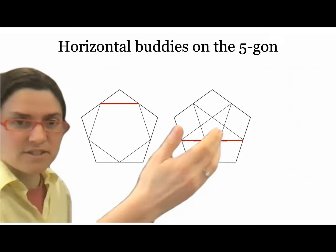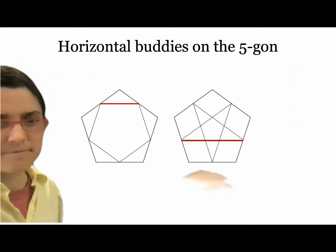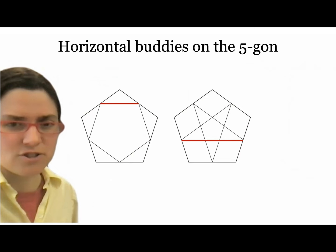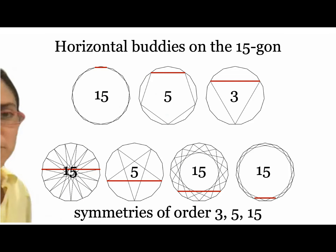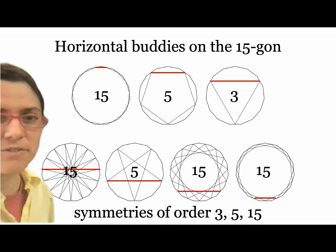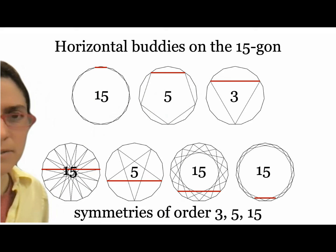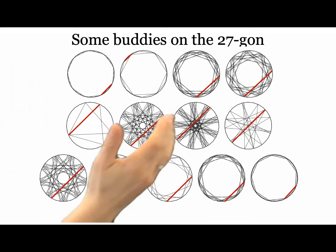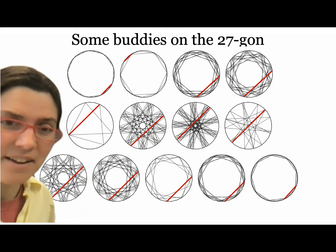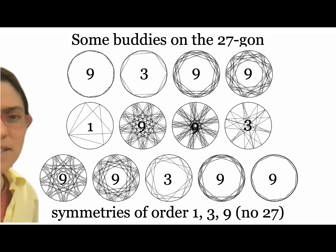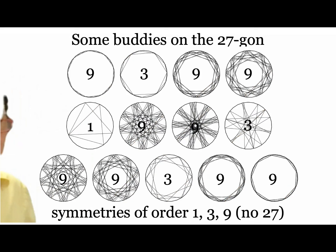Here are some horizontal buddies on the regular pentagon — you can see they're parallel because of the emphasized horizontal edge. This is horizontal buddies on the 15-gon: they're all parallel, but you get all this different stuff just by moving the horizontal trajectory down. These have orders of symmetry 15, 5, and 3. You can convince yourself that the order of symmetry of one of these trajectories always has to be a divisor of the number of sides. How about the 27-gon? Putting a trajectory in that direction and sliding it, you can get really different stuff. So beautiful — these have 1, 3, and 9-fold symmetry.